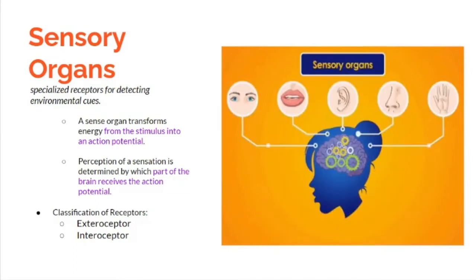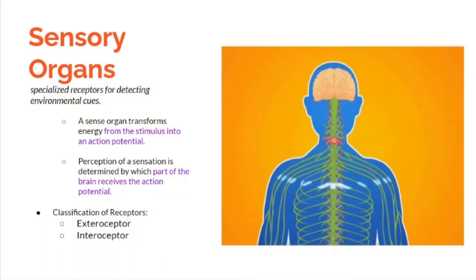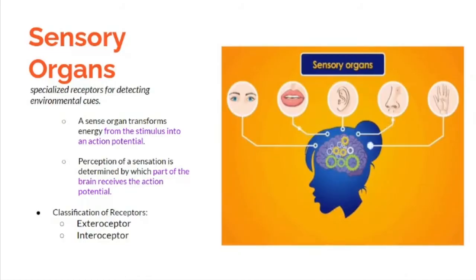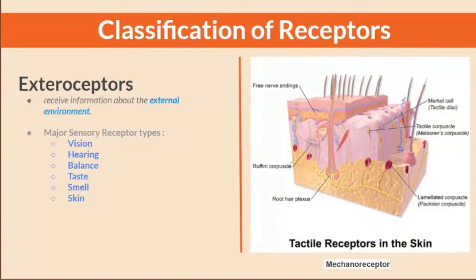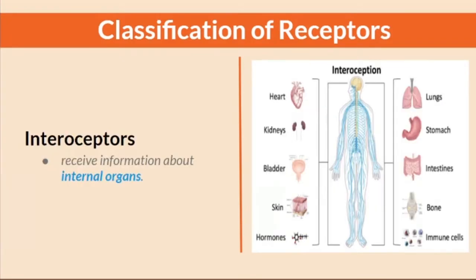Classification of receptors: we have the exteroceptor and the interoceptor. The exteroceptors receive information about the external environment. The major sensory receptor types are vision, hearing, balance, taste, smell, and skin.